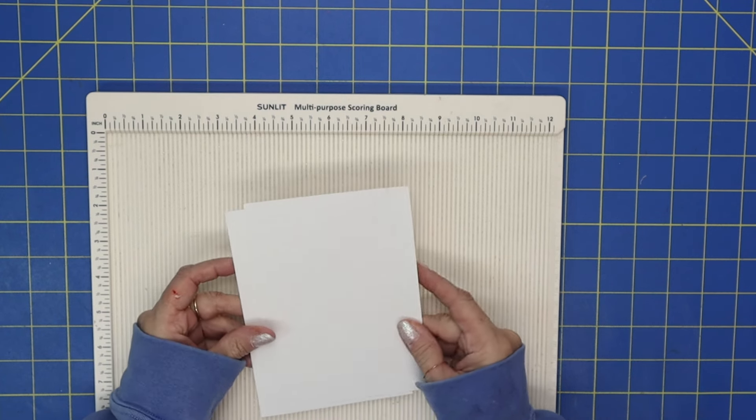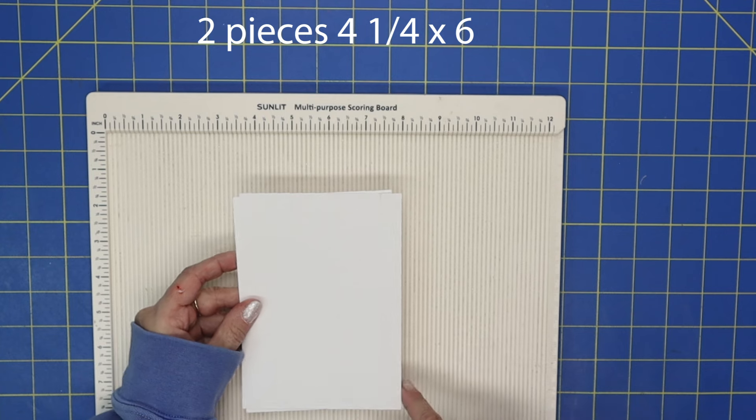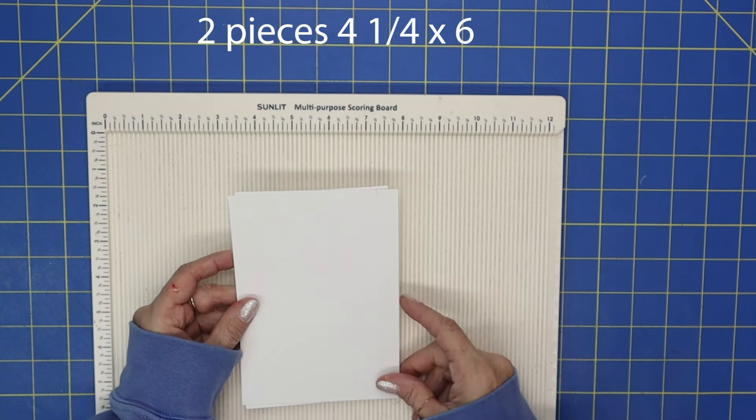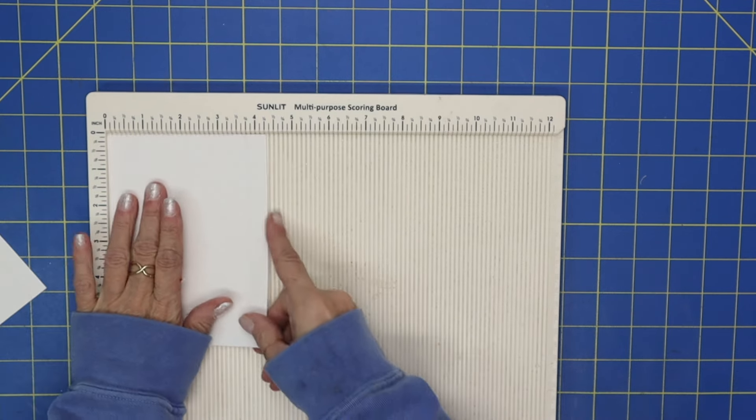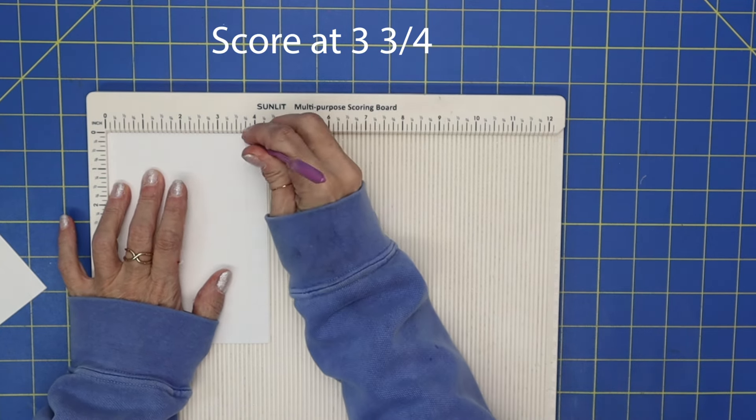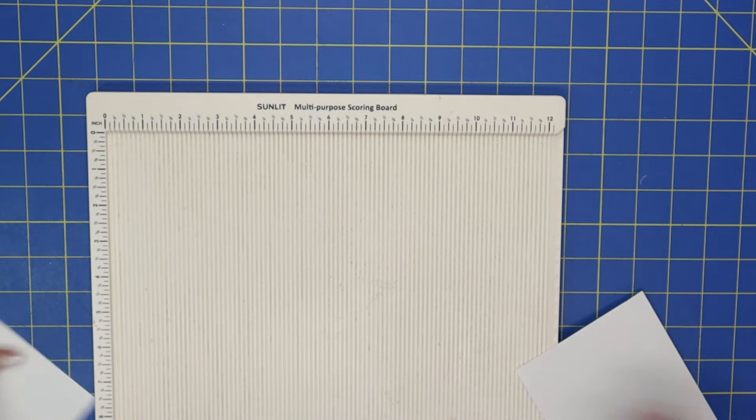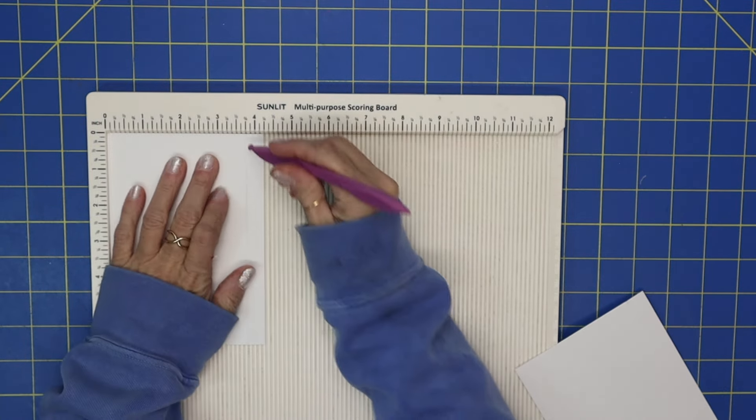Then you are going to need two pieces of paper that are 4.5 by 6 inches—two pieces, 4.5 by 6. And on the 4.5-inch side you want to score it at 3 and 3/4 inches.